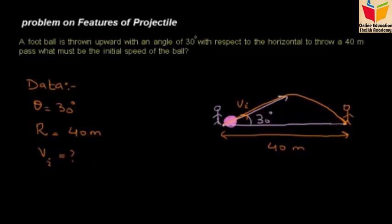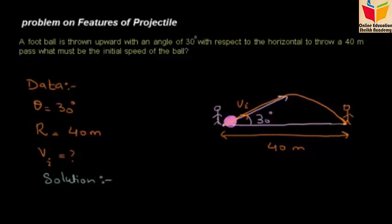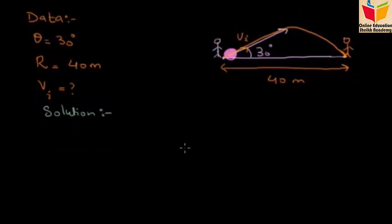Now for the solution, how can we solve this problem? The range of the projectile - we have learned the formula that R equals Vi squared divided by g times sine of 2 theta. Using this formula, we can calculate the Vi value.